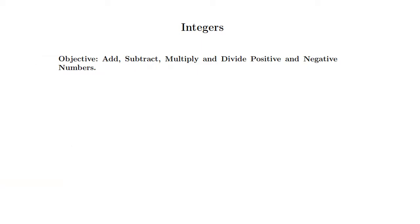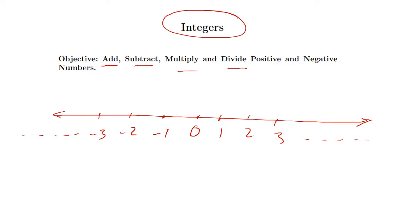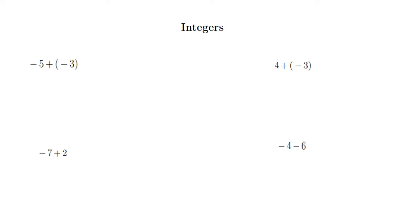The ability to work with negative numbers and positive numbers, which are integers, is very important for success in algebra. The set of integers is the set of whole numbers from the negative side to the positive side, including zero — so 1, 2, 3 and so on to the right, and negative 1, negative 2, negative 3 and so on to the left. The four operations of adding, subtracting, multiplying, and dividing positive and negative numbers are very important in algebra.